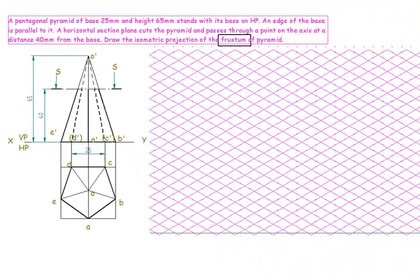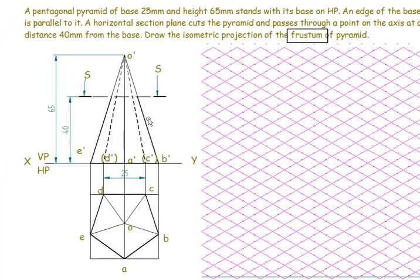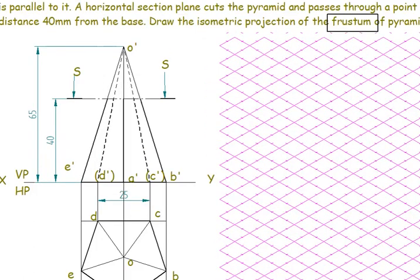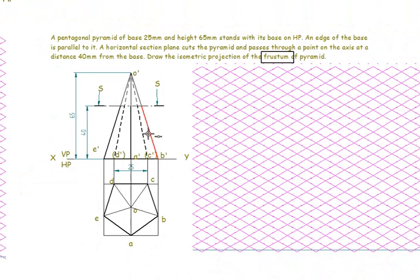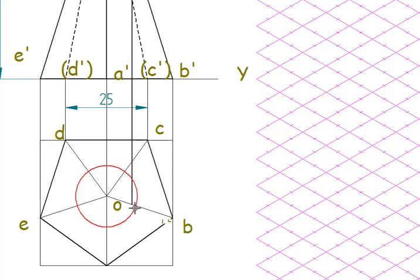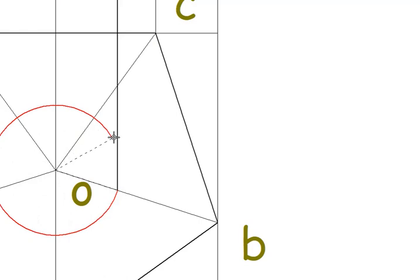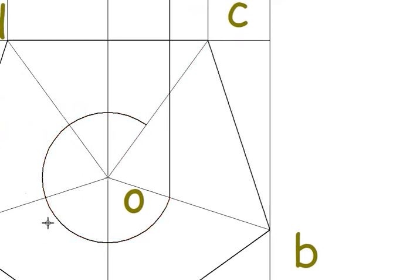Now I need to see the top face dimensions, since only the base side length of 25mm is given — the top face length is not given. So I need to find that distance by projection. I project the line till O dash B dash height and draw an arc keeping that as the endpoint. This gives the radius for the top face. This is again a construction line and should be in thin lines.